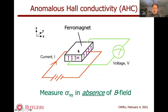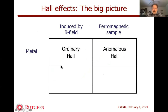In the anomalous Hall effect, you don't apply any external magnetic field. Instead, the sample itself has to be ferromagnetic, so the time reversal symmetry is spontaneously broken in this metallic sample. When you drive a current through it, it shows a transverse voltage in the absence of any magnetic field. That's the anomalous Hall effect or the anomalous Hall conductivity. So here I make a little chart for metallic systems: the ordinary Hall effect and the anomalous Hall effect without a magnetic field.